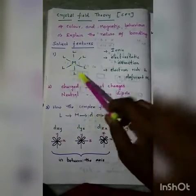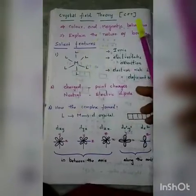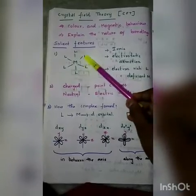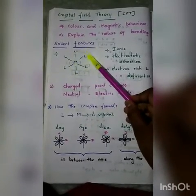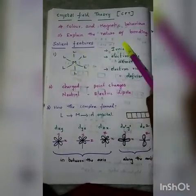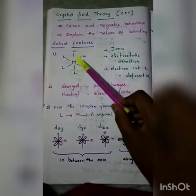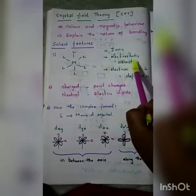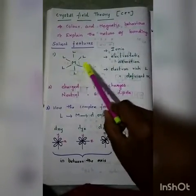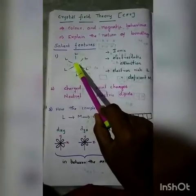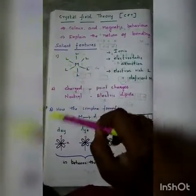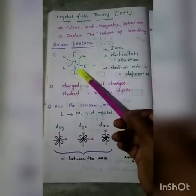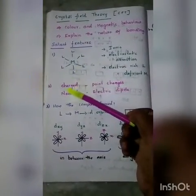Now let us see the salient features of CFT, which is nothing but Crystal Field Theory. The first point: the bond between the metal atom and the ligand is assumed to be ionic in nature. This bond is formed due to the electrostatic force of attraction between the electron-rich ligand and the electron-deficient metal.